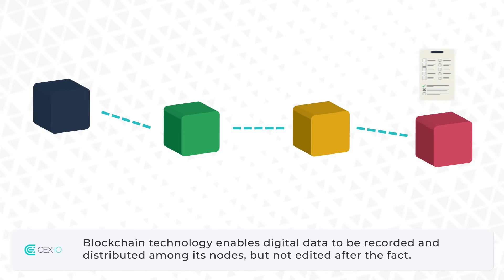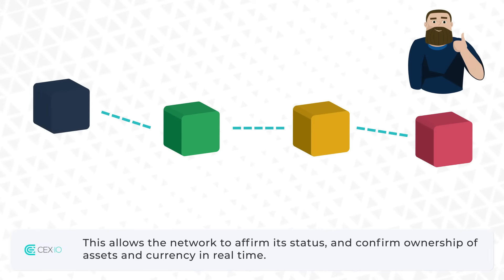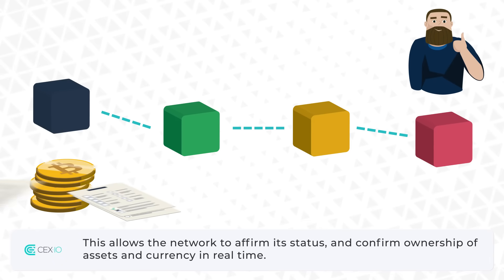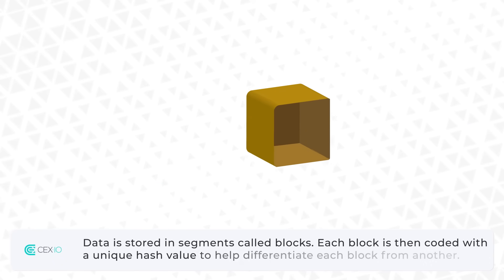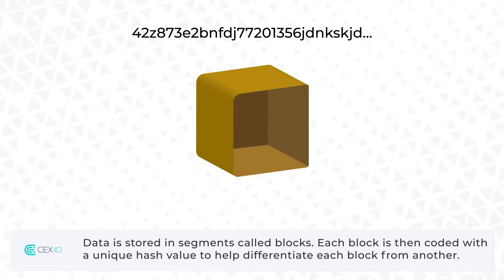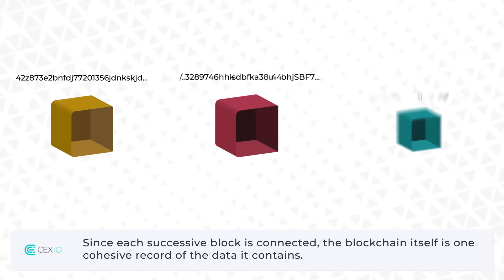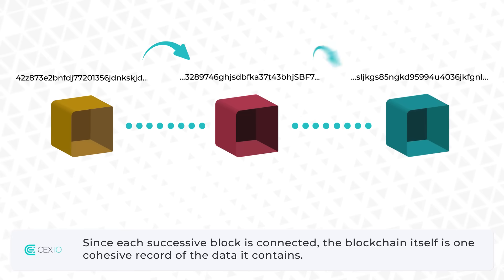Blockchain technology enables digital data to be recorded and distributed among its nodes, but not edited after the fact. This allows the network to affirm its status and confirm ownership of assets and currency in real time. Data is stored in segments called blocks. Each block is then coded with a unique hash value to help differentiate each block from another. Since each successive block is connected, the blockchain itself is one cohesive record of the data it contains.